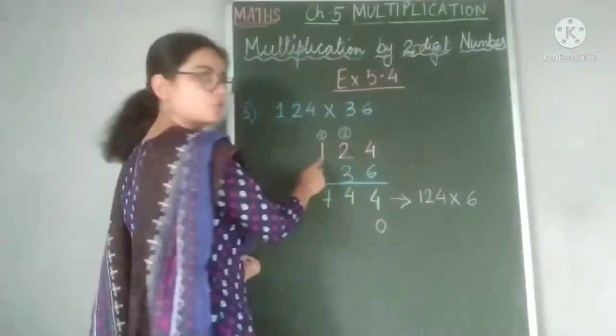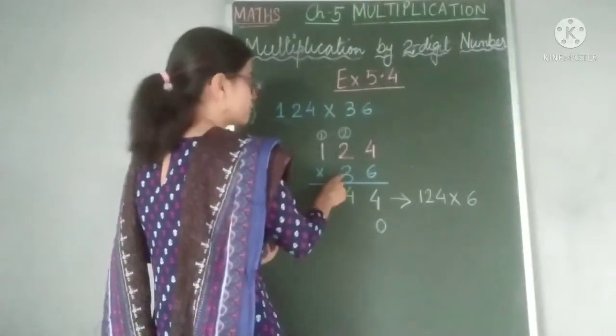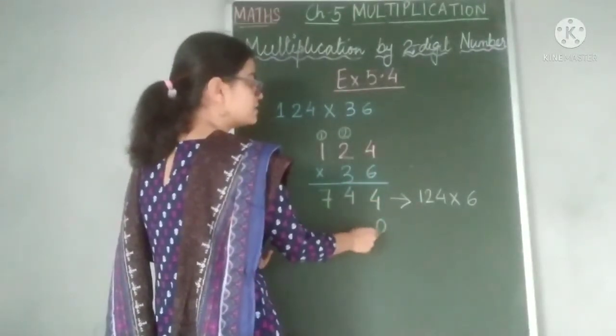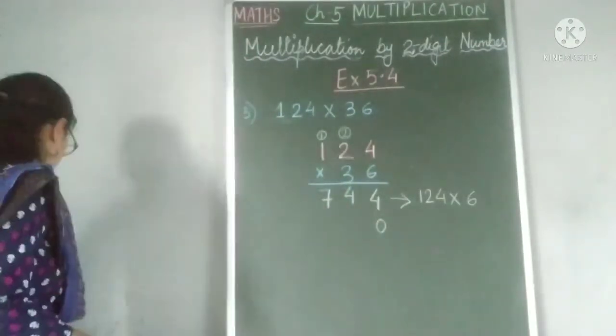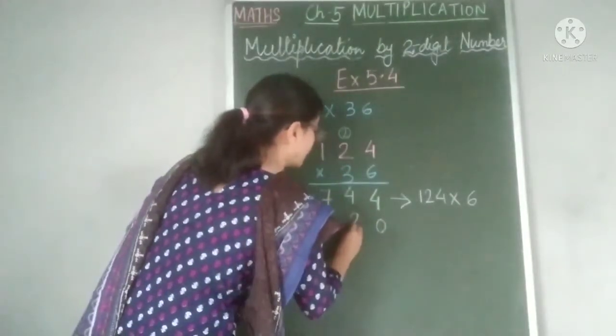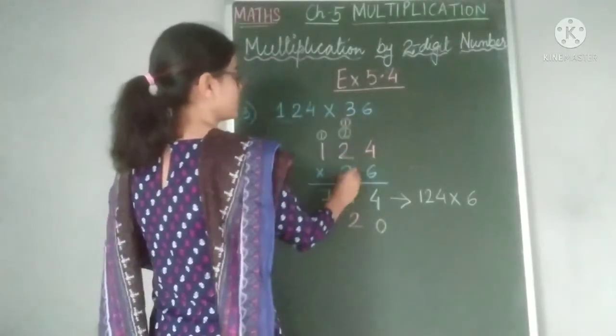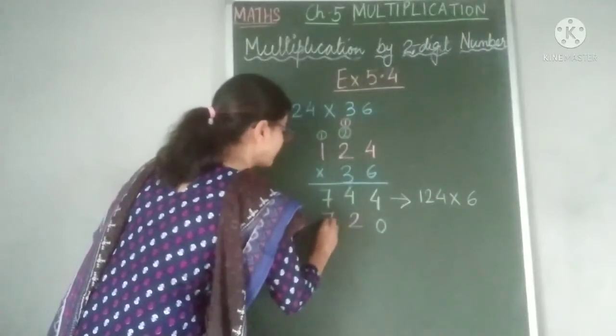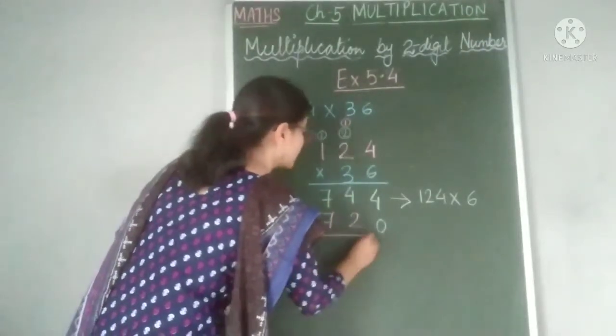Now, 3 times 4 are - children, you will not write the answer here. Because here we have to write 0 as it is from the tens place. Now, 3 times 4 are 12. I write 2 here and 1 is carried over to the tens place. Now, 3 times 2 are 6 plus 1 is 7. 3 times 1 are 3.